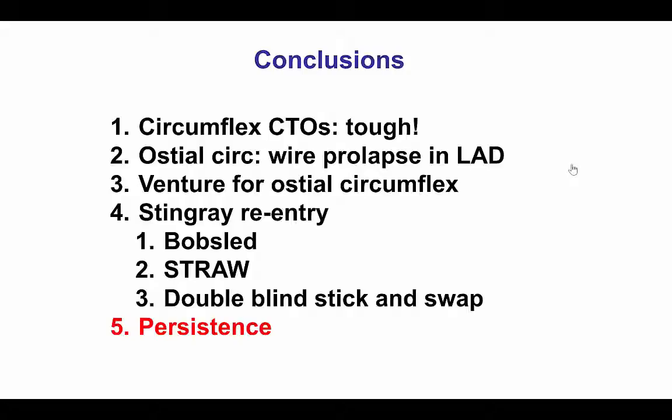The ostial circumflex can be hard to wire because the wire tends to prolapse into the LAD, and in this case the Venture catheter was very useful, providing strong support and a bend for wiring into the circumflex. We had to perform several re-entry attempts, essentially using every Stingray technique: the bobsled — trying different parts of the vessel — and the STRAW (subintimal transcatheter aspiration withdrawal), in which we aspirated from the back end of the Stingray balloon to empty any subintimal hematoma, followed by the double blind stick and swap technique to re-enter the distal vessel.